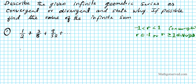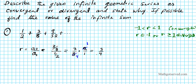Let's find the common ratio for this infinite series. R equals a2 divided by a1, so it's 3/8 divided by 1/2. That gives us 3/8 multiplied by the reciprocal 2/1. Cross-reducing, 2 goes into 2 giving 1, and 2 goes into 8 giving 4. So the common ratio is 3/4. Is 3/4 between negative 1 and 1? Absolutely — 3/4 is somewhere right here on the number line, within that interval.